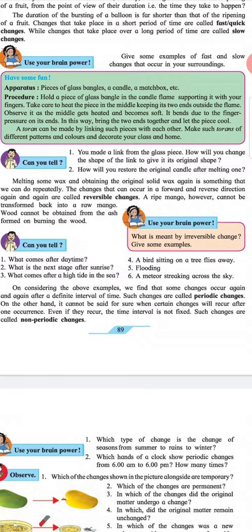Wood cannot be obtained from the ash formed on burning the wood. Use your brain power: What is meant by irreversible change? Give some examples.